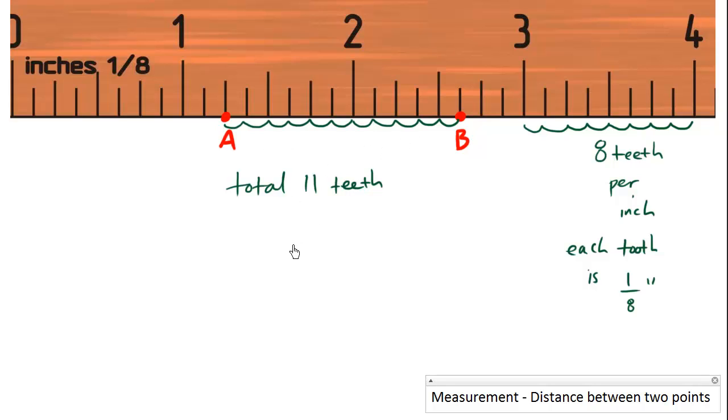The total distance here is going to be 11 times one eighth of an inch. And we know how to multiply two numbers. 11 is the same thing as 11 over 1 times one eighth. And what we have here is we multiply across. The numerators multiply: 11 times 1 is 11. And the denominators multiply: 1 times 8 is 8. So our final answer is 11 eighths.